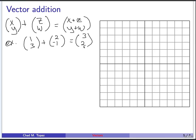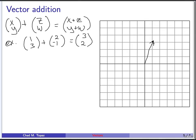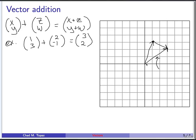Geometrically, think about vector addition as a set of walking directions. When you see (1, 3), visualize walking 1 unit over and 3 units up. Then (2, -1) means from where you just walked to, go 2 units to the right and 1 unit down. Then you ask yourself where you end up. The resultant vector is 3 units over from your original location and 2 units up — so it's the vector (3, 2).